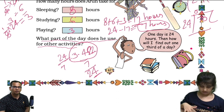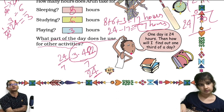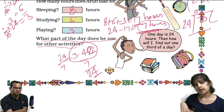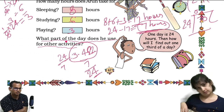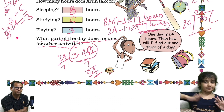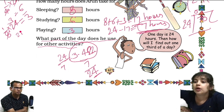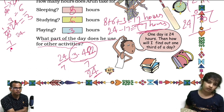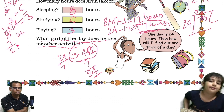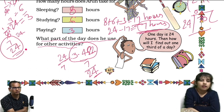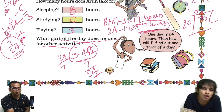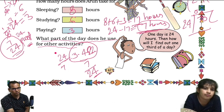Now we have to calculate: what part of the day does Arun use for other activities? We calculated 7 hours for other activities. In one day there are 24 hours, so he uses 7 out of 24 hours. Therefore, 7 by 24 — seven twenty-fourths — is the part of the day he uses for other activities.